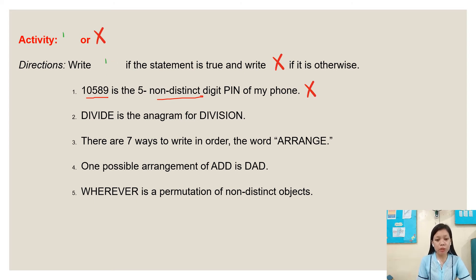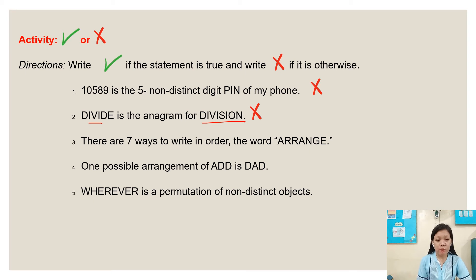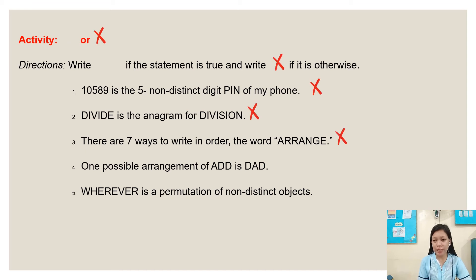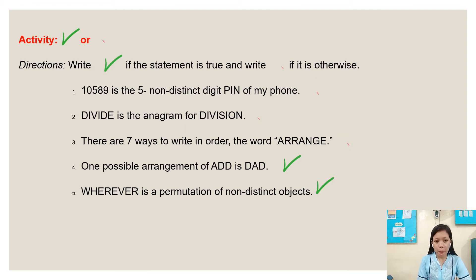Number 2: 'DIVIDE is the anagram for DIVISION.' It is wrong because DIVIDE is different from DIVISION. Number 3: 'There are 7 ways to write in order the word ARRANGE.' Wrong. Number 4: 'One possible arrangement of ODD is DOO.' That is correct. Number 5: 'WHEREVER is a permutation of non-distinct objects.' It is correct.